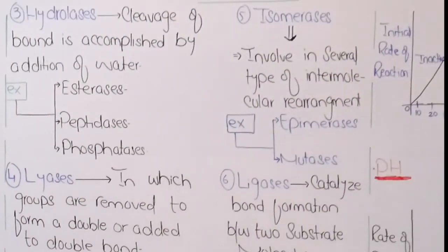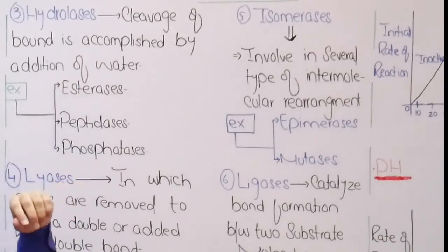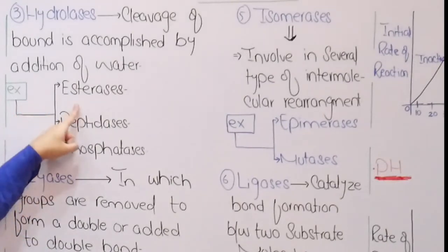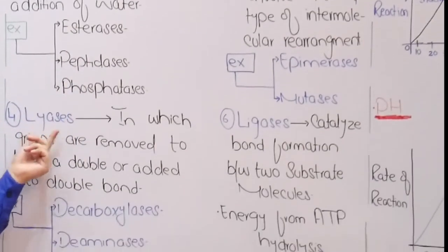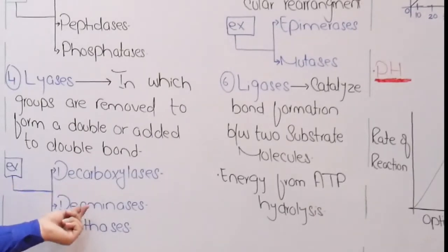The third category is hydrolases: these enzymes are involved in the cleavage of bonds by the addition of a water molecule. Examples include esterases, peptidases, and phosphatases. The fourth category is lyases: these enzymes involve the addition or removal of groups to form double bonds or ring structures. Examples include decarboxylases, deaminases, and synthetases.